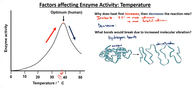If we have denaturation, we have loss of structure and therefore loss of function. So we have denaturation of the enzyme — we can no longer interact with the substrates and so no longer carry its function. In humans, the optimal temperature is 37 degrees.